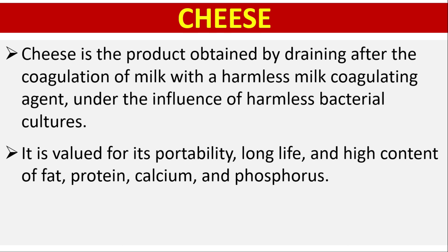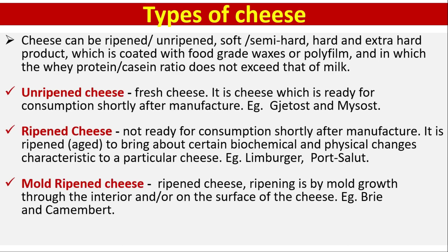Types of cheese: Cheese can be ripened or unripened, soft or semi-hard, hard, and extra hard. It is a product which is coated with food-grade waxes or polyfilms, and in which the whey protein or casein ratio does not exceed that of milk.